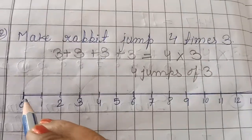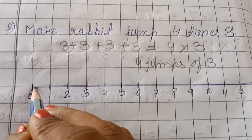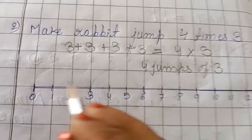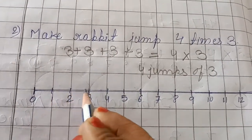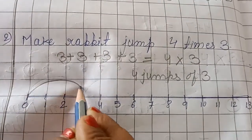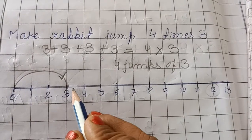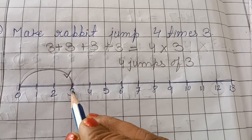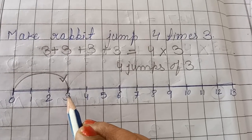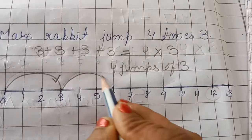So the first jump will take a gap of 3: 1, 2, 3. In the first jump it will reach to 3. Now let's take the second jump — again it will move 3 steps ahead: 1, 2, 3. So it will reach to 6 in the second jump.